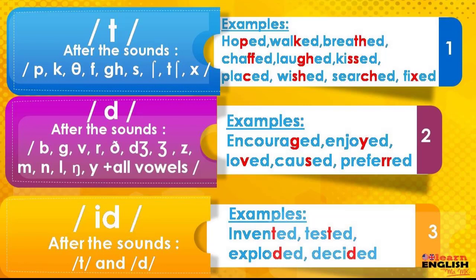When do we pronounce ED as /d/? After the following sounds: /b/, /g/, /v/, /ð/, /z/, /ʒ/, /dʒ/, /m/, /n/, /l/, /ŋ/, /r/, /j/.